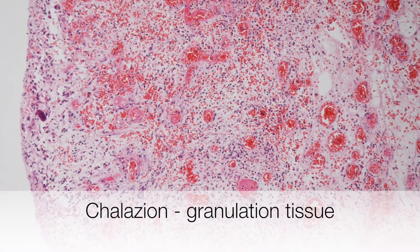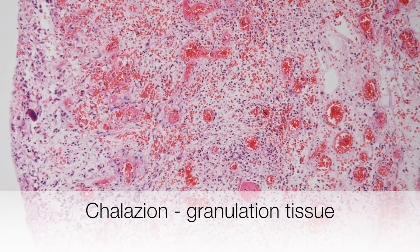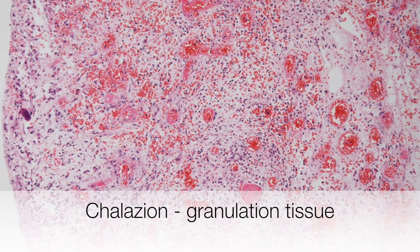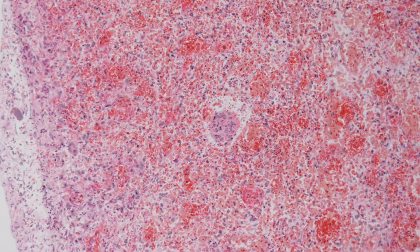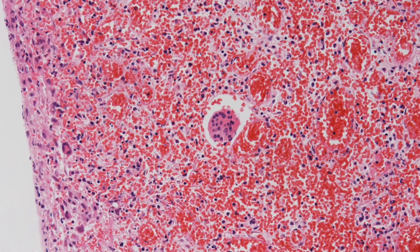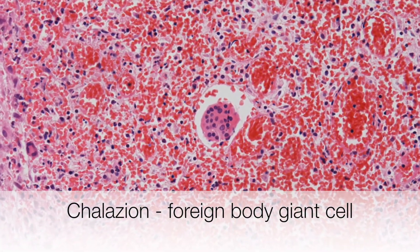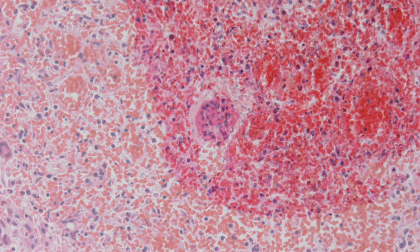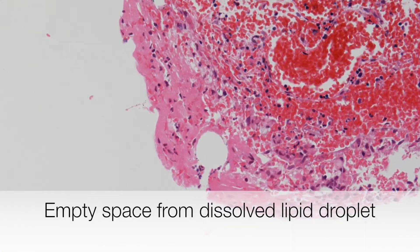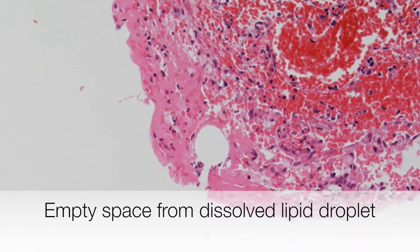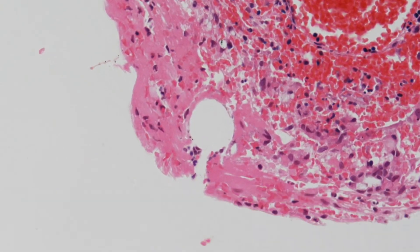This is a biopsy from a chalazion, and here the lesion is composed predominantly of inflamed granulation tissue. Here is a higher power with a foreign body giant cell in the middle of the picture. And in this area there is an empty space where the lipid has been dissolved out.